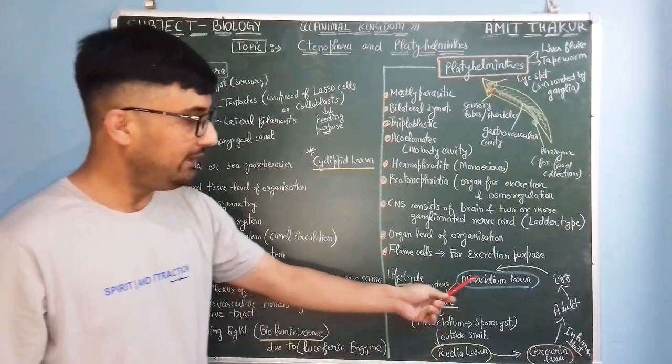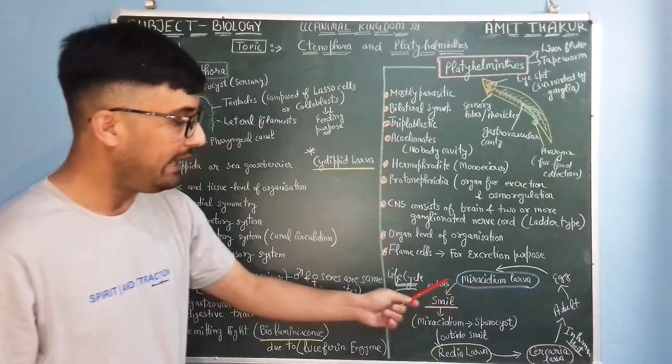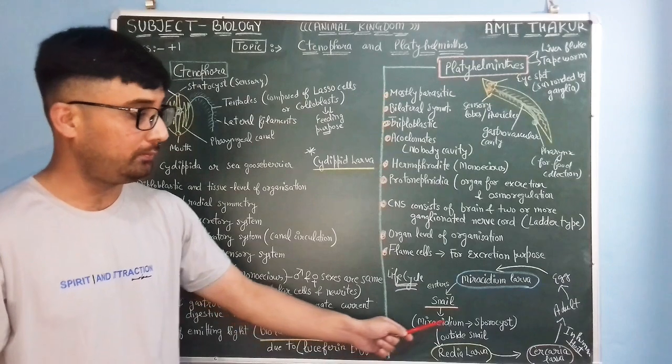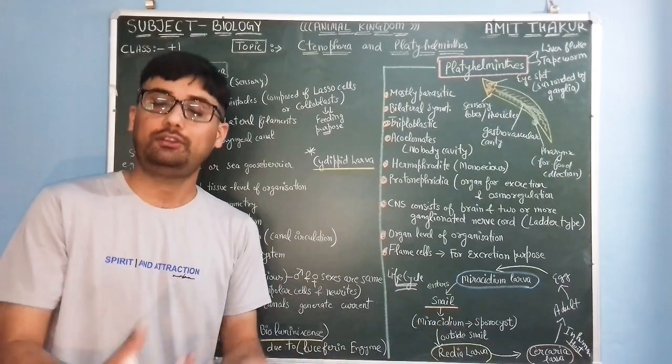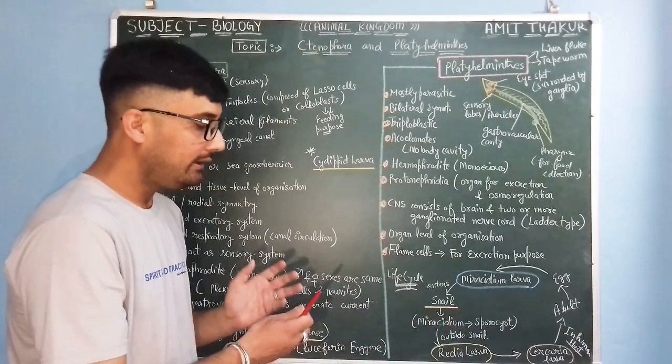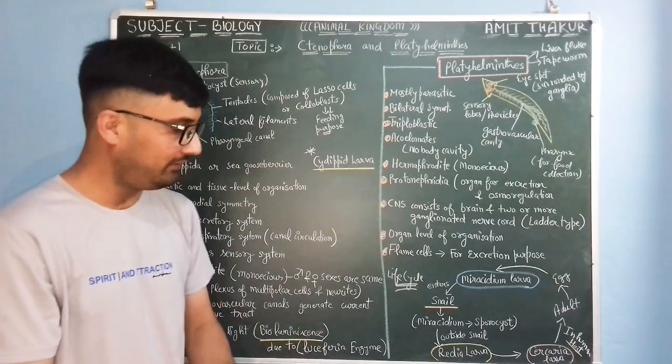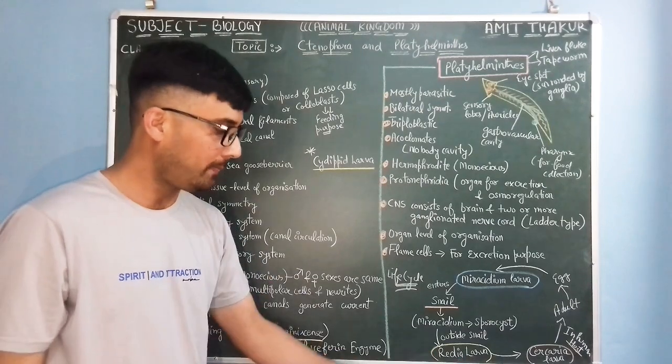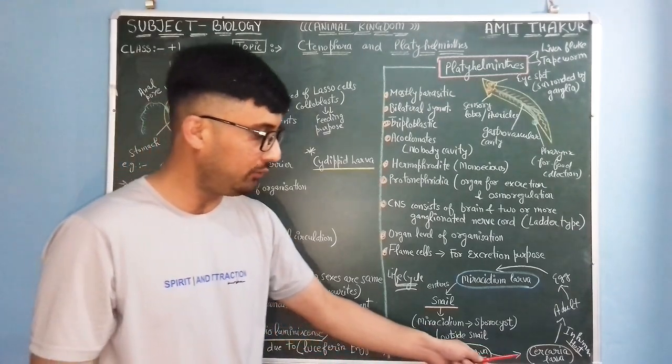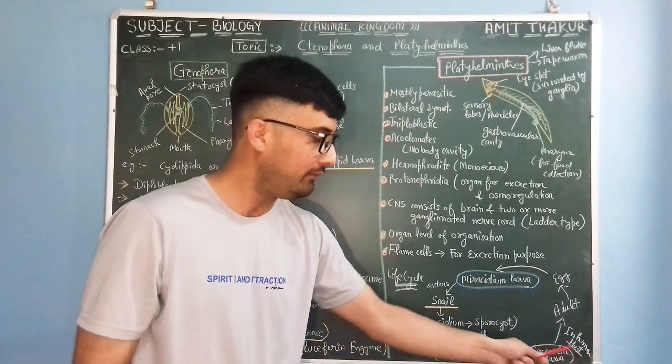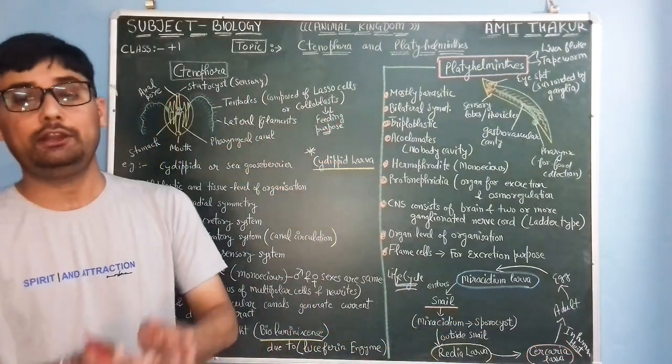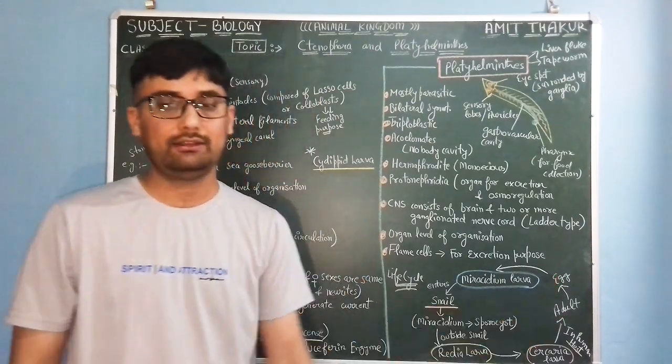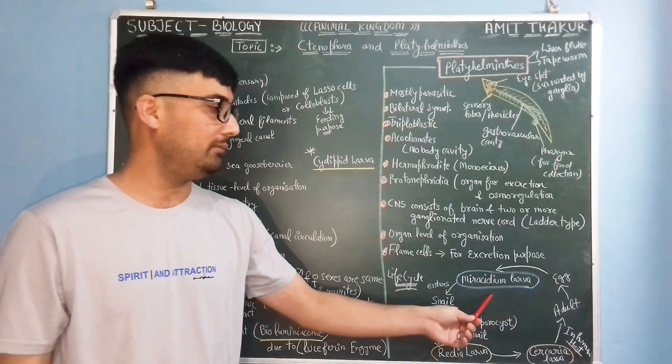So the Miracidium larva, this Miracidium larva actually enters inside the body of snail and inside the snail this Miracidium changes into sporocyst, pathogenic sporocyst form. This sporocyst then gets outside the body of snail and converts into another larval form, Redia larva. This Redia larva is converted into Cercaria larva and this Cercaria larva actually enters inside the human host where it becomes adult and lay eggs and then again changes into Miracidium larva.